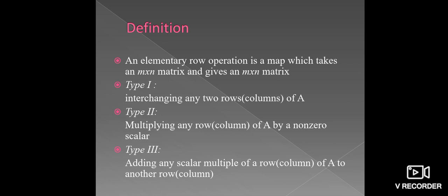It contains three types. First one, interchanging any two rows or columns of a matrix A. Type 2: Multiplying any row or column of a matrix A by a non-zero scalar.